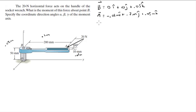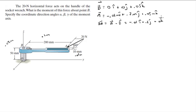The vector from B to A equals vector A minus vector B, which gives negative 0.01i plus 0.2j plus 0k. Then we need to find the Cartesian vector form of the force.